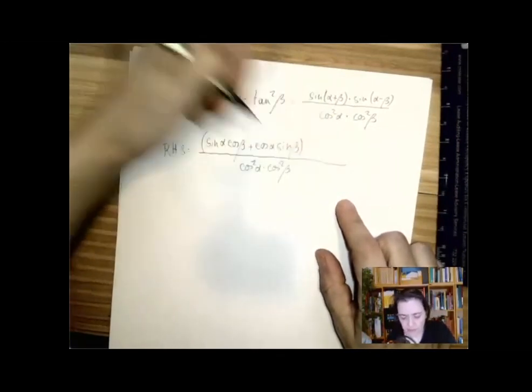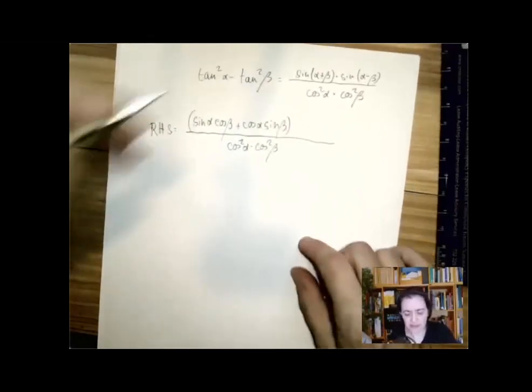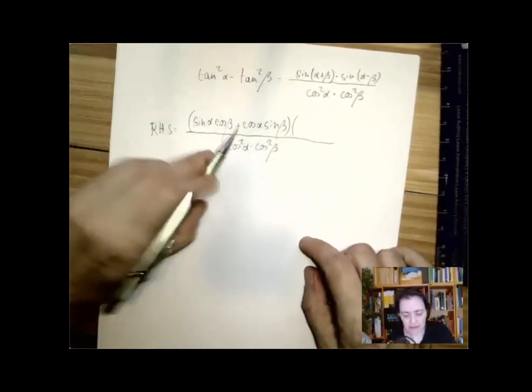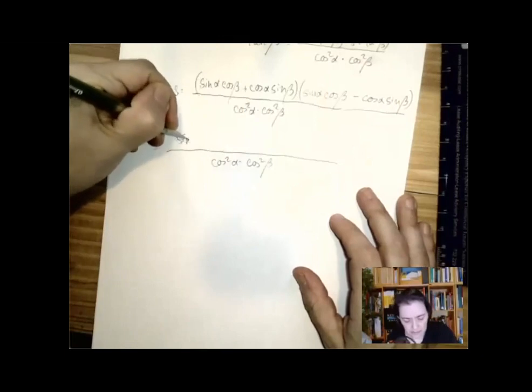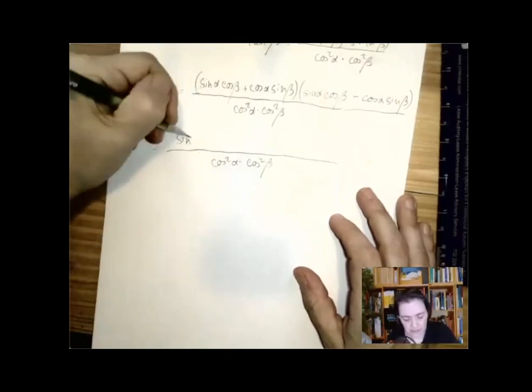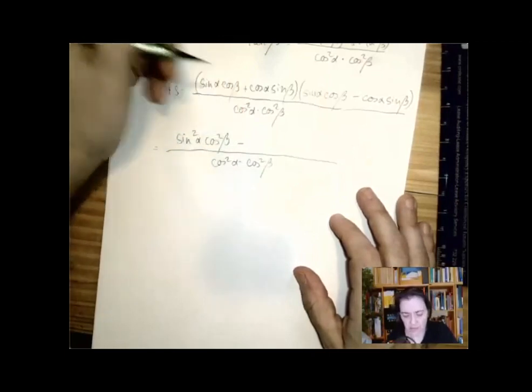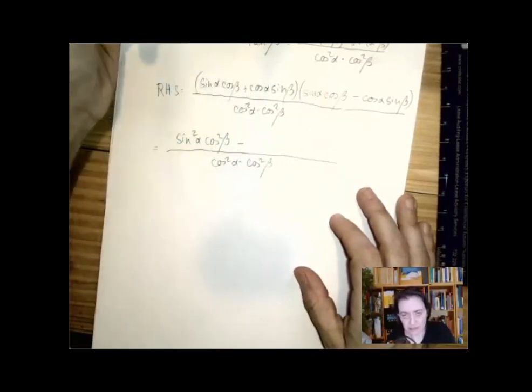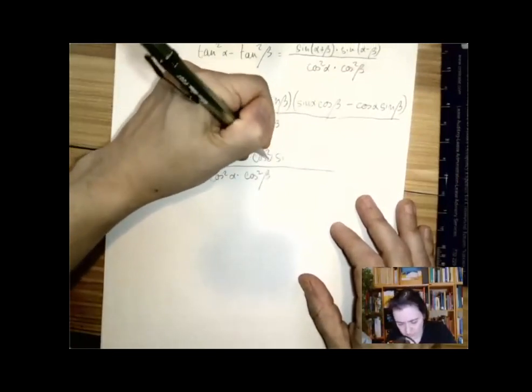So the sum formula for sine is sine alpha cosine beta plus cosine alpha sine beta, which we multiply by the same thing, just a minus here. So what we have is sine alpha cosine beta squared, which is sine squared alpha cosine squared beta, minus cosine alpha sine beta squared, which is cosine squared alpha sine squared beta.